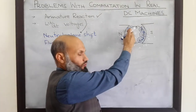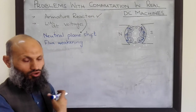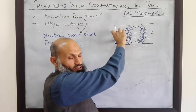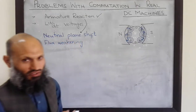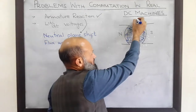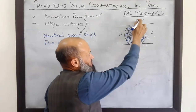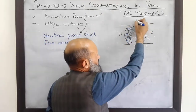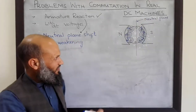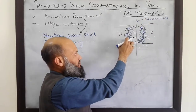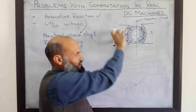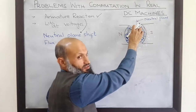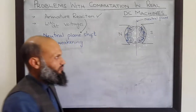When no current is flowing in the coils — that is when no load is connected to this machine — there is only the magnetic field due to the main poles. We already know that at this point the net flux density is equal to zero, so this plane is called the neutral plane. When no current is there in the coils, there is only magnetic field due to main poles and flux density at this point is zero.